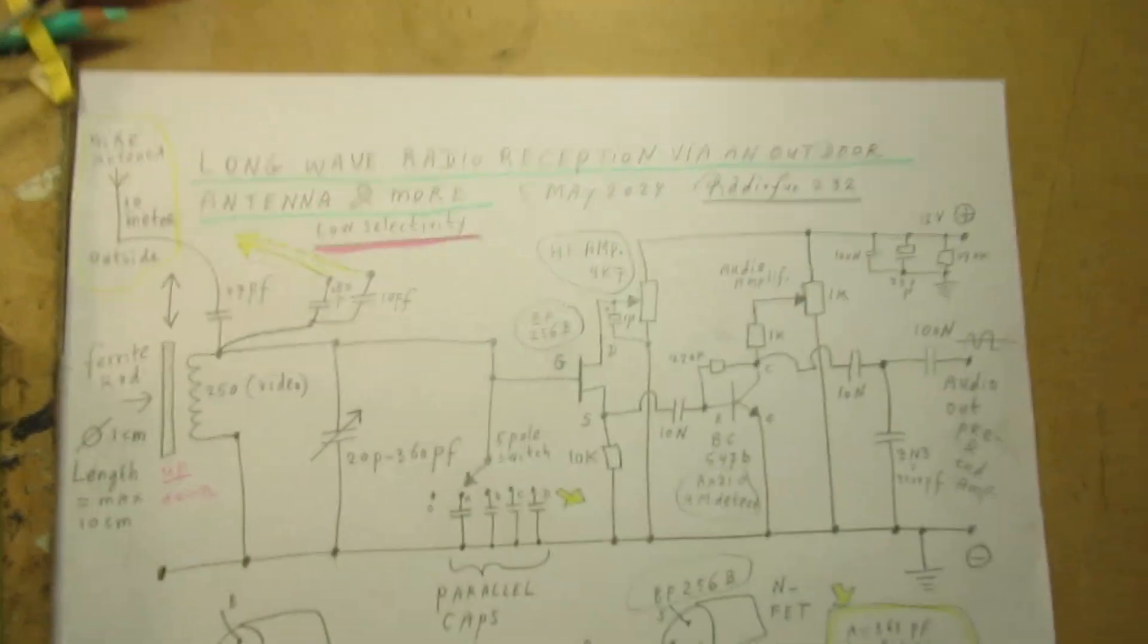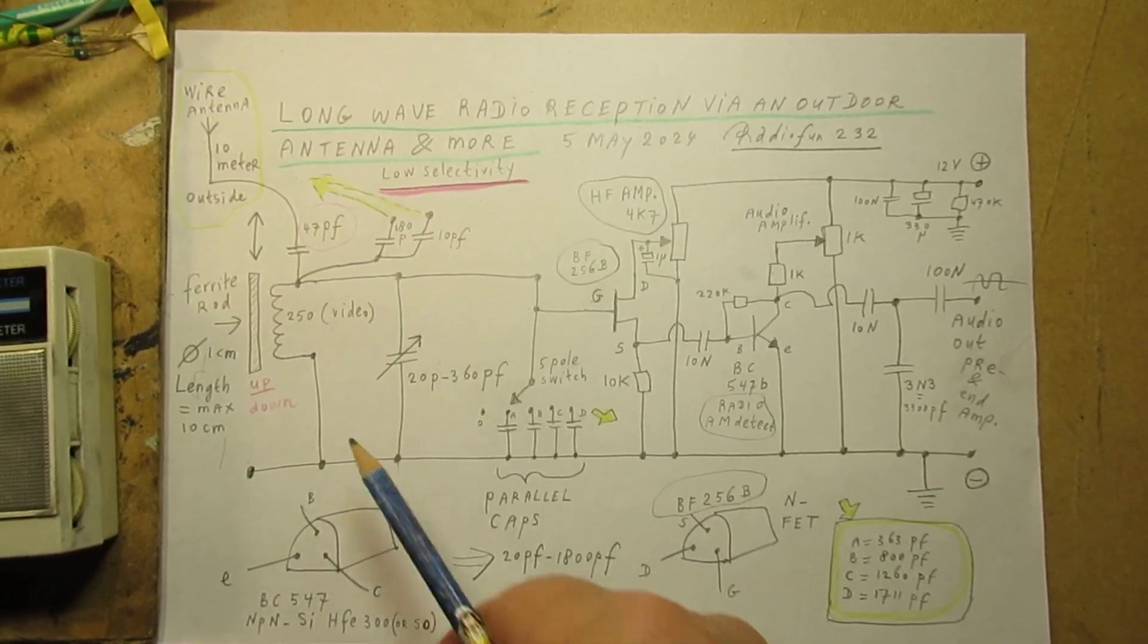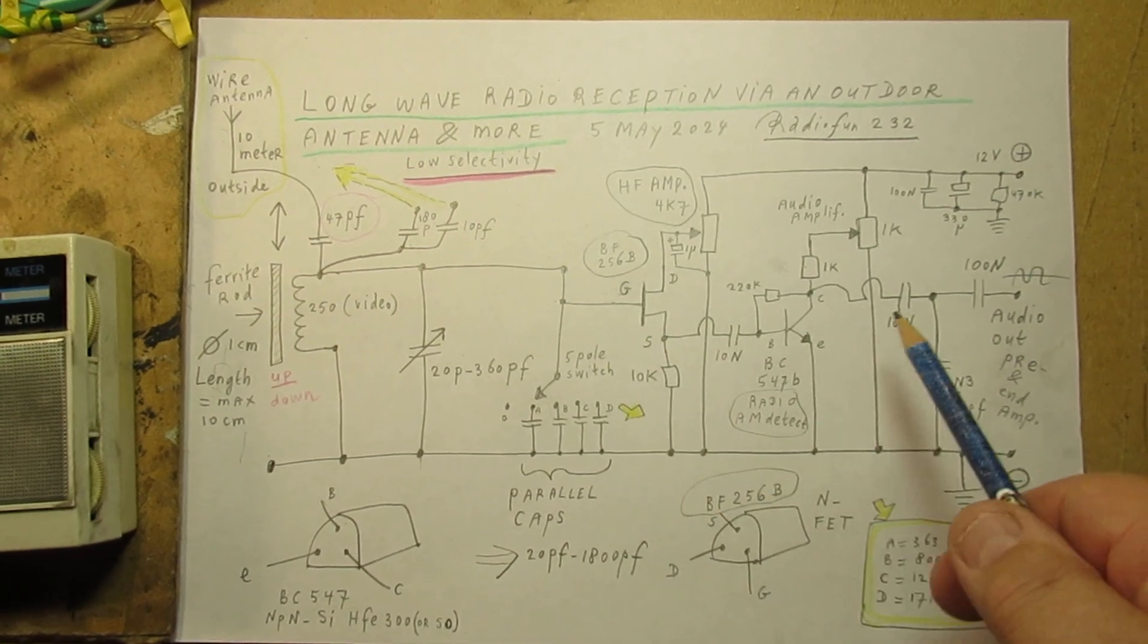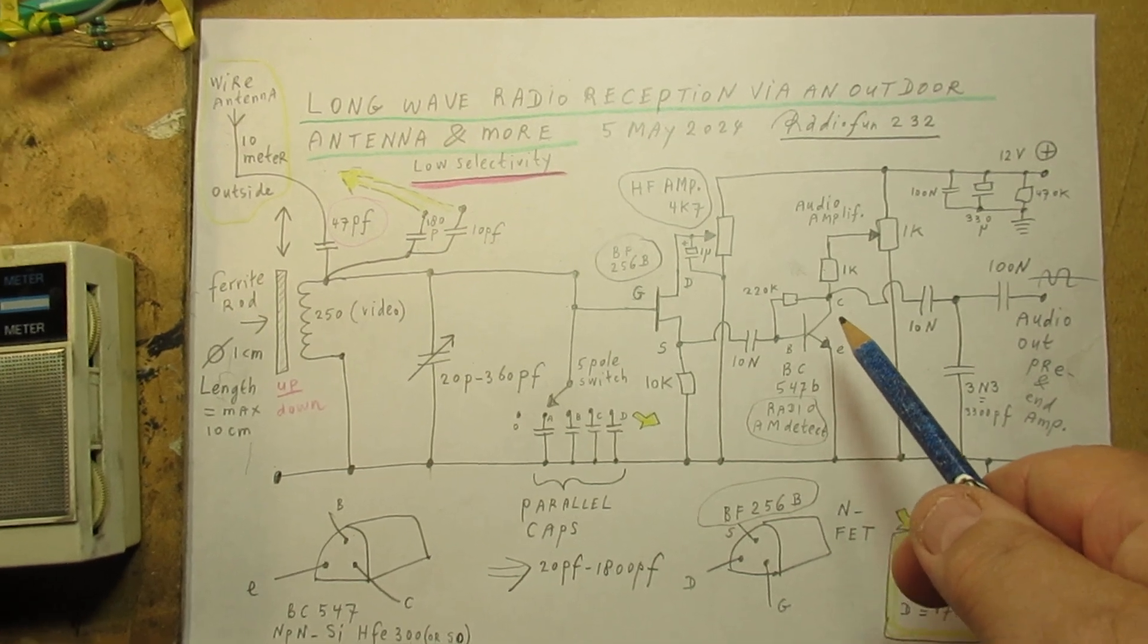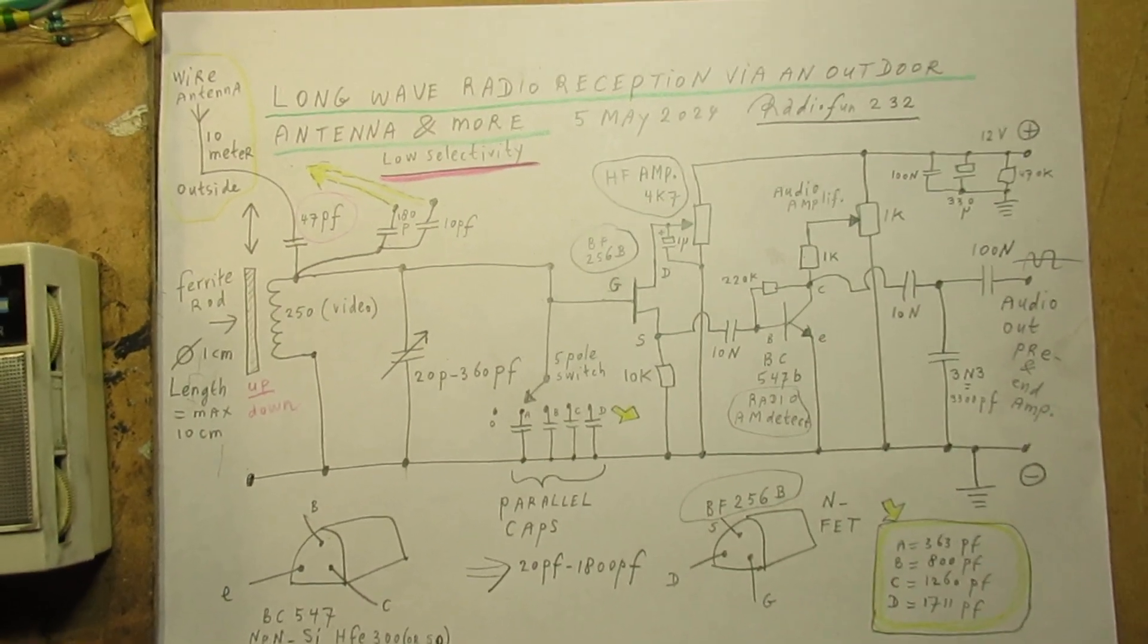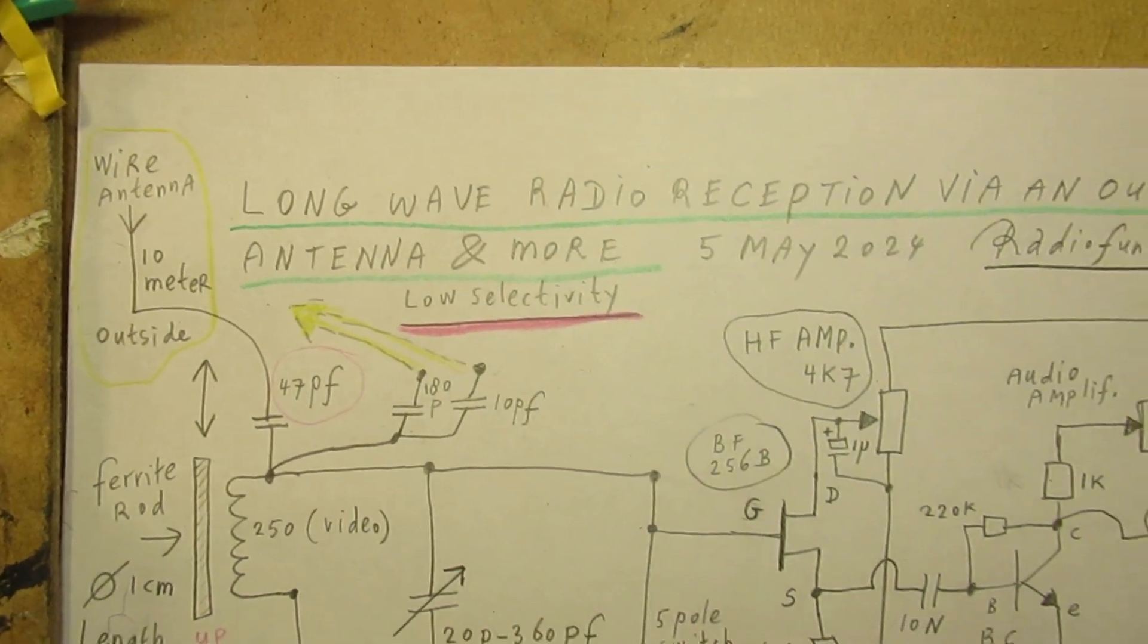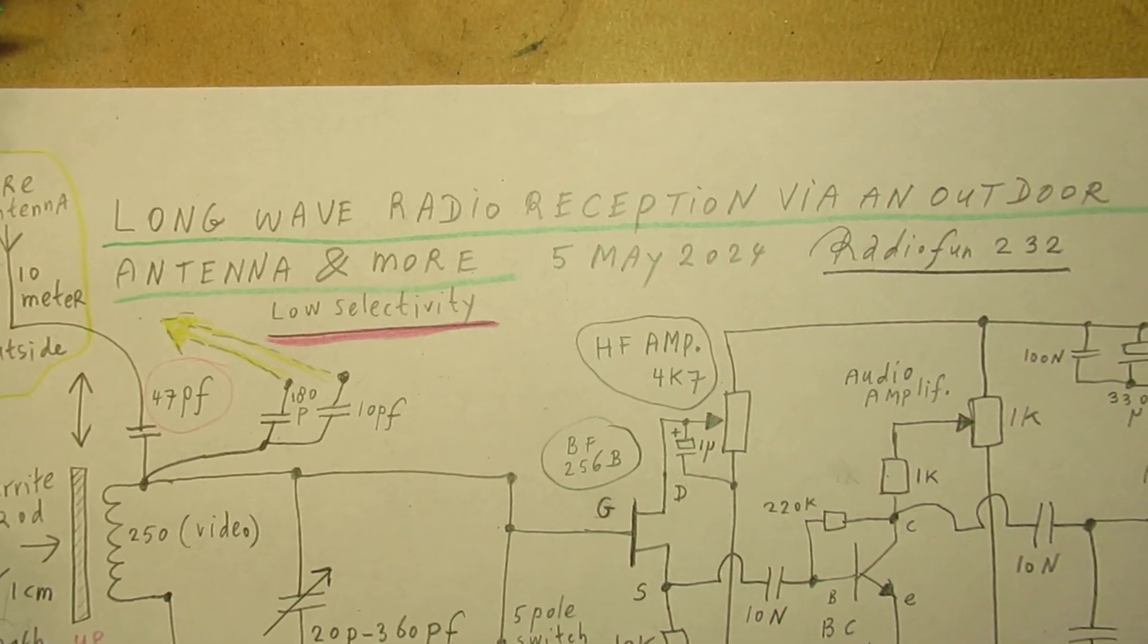Here is the schematic. This is the front end. Here we have a field effect transistor. Here we have an audio amplifier, or a radio amplifier that also detects the short wave radio signal in an amplitude modulated way.